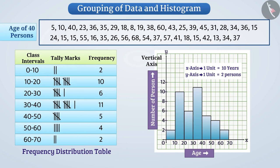To show this, the scale of 1 unit equals 2 persons has been taken. The length of a rectangle drawn on a class interval tells us how many observations occur in that class interval. The number of observations in a class interval is called the frequency of that class interval.